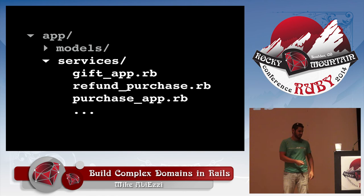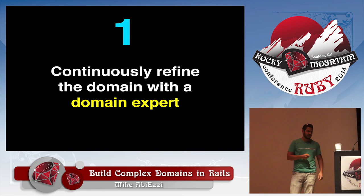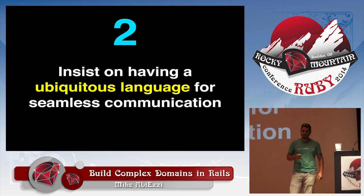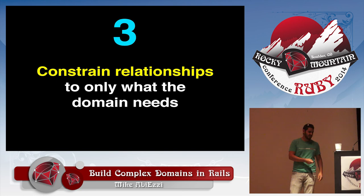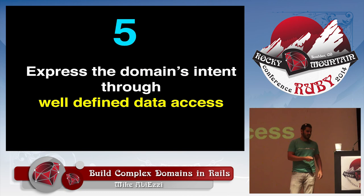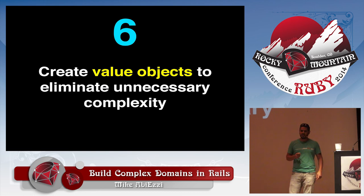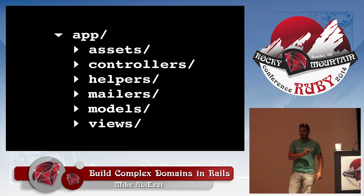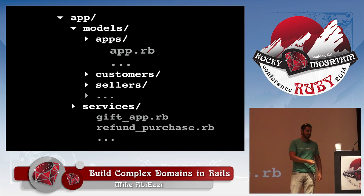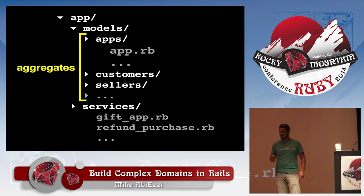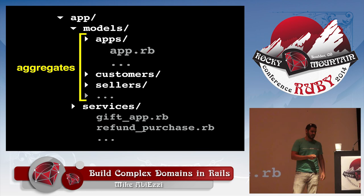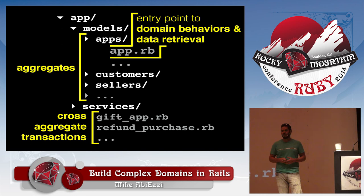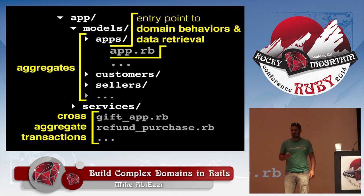In summary: we talked about how to continuously refine the domain with the domain expert. We talked about insisting on ubiquitous language for seamless communication across your team. We talked about constraining relationships to only the ones you need. We talked about creating aggregates to manage complexity and express domain behaviors. We talked about expressing the domain's intent through well-defined data access. We talked about creating value objects to eliminate unnecessary complexity. And we talked about creating domain services to express transactions between aggregates. We started out with a Rails directory that just tells us it's Rails, and now we have one that actually tells us how our domain works — we know all the entry points, where to retrieve data, where to enact domain behaviors, and all the cross-aggregate transactions.